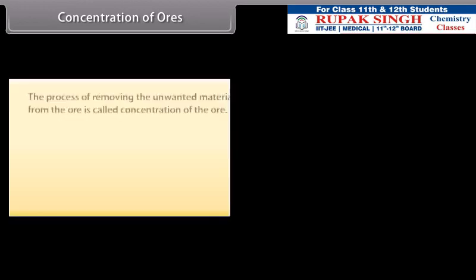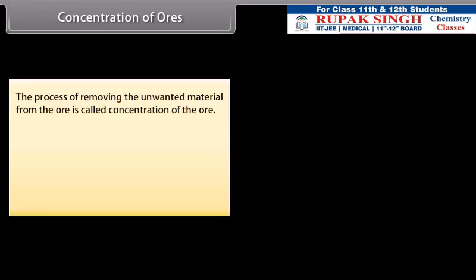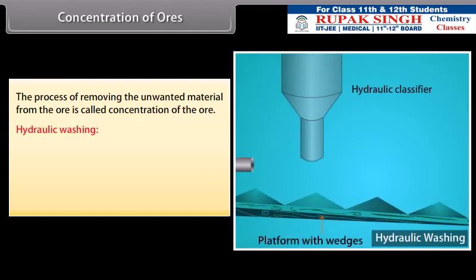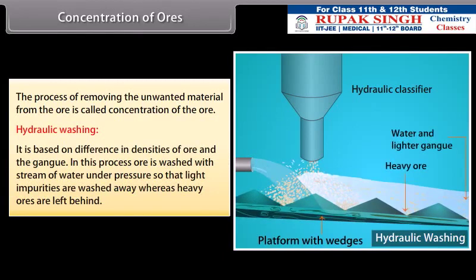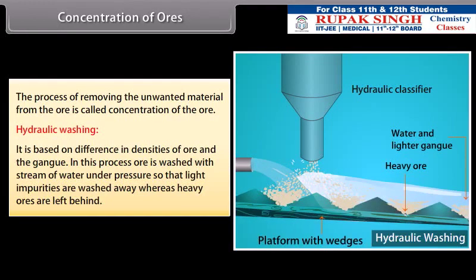Concentration of ores. The process of removing the unwanted material from the ore is called concentration of the ore. The important methods for concentration of the ore are: Hydraulic washing. It is based on difference in densities of ore and the gang. In this process, ore is washed with stream of water under pressure so that light impurities are washed away whereas heavy ores are left behind.